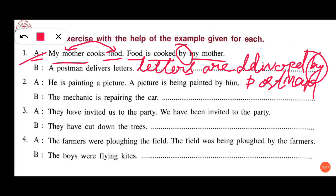Next set (number 2). In (a): 'He is painting a picture' becomes 'A picture is being painted by him.' In (b): 'The mechanic is repairing the car.' The car comes first in passive voice: 'The car is being repaired by the mechanic.'